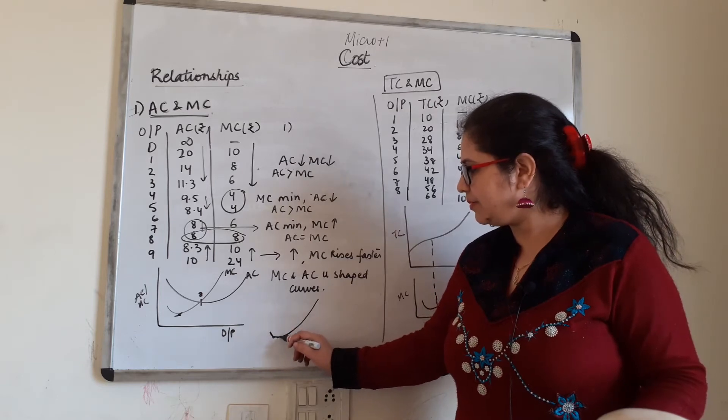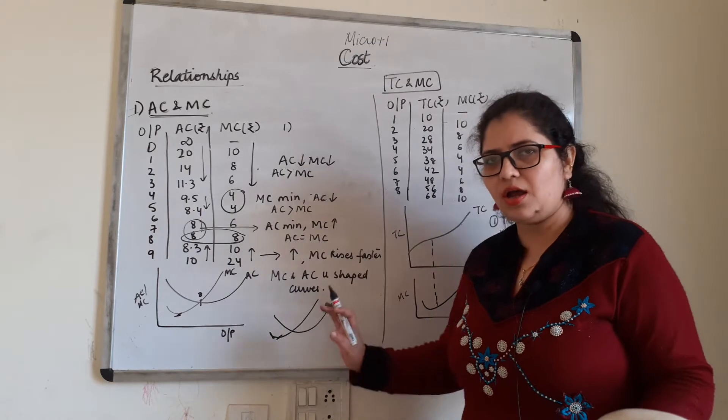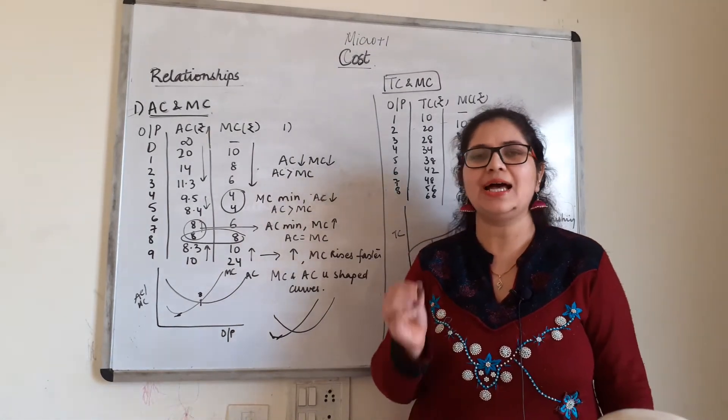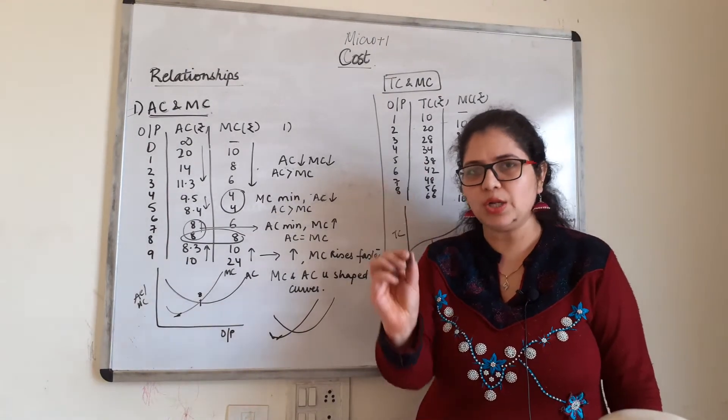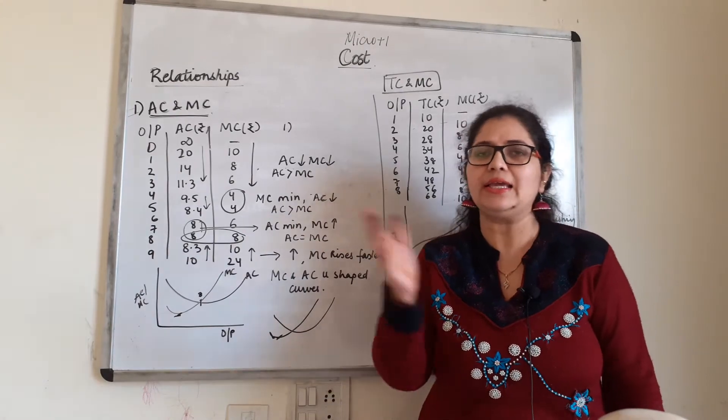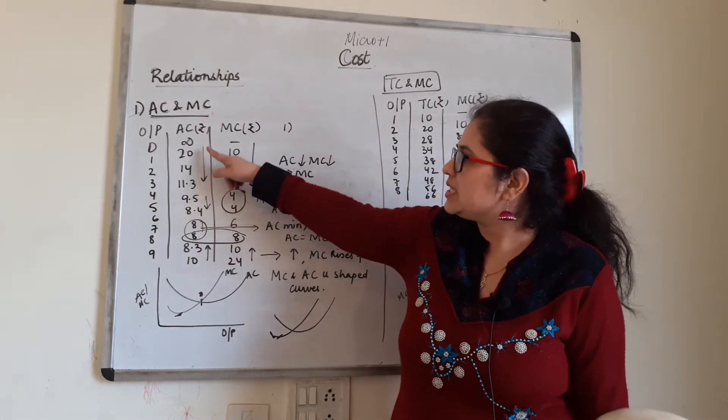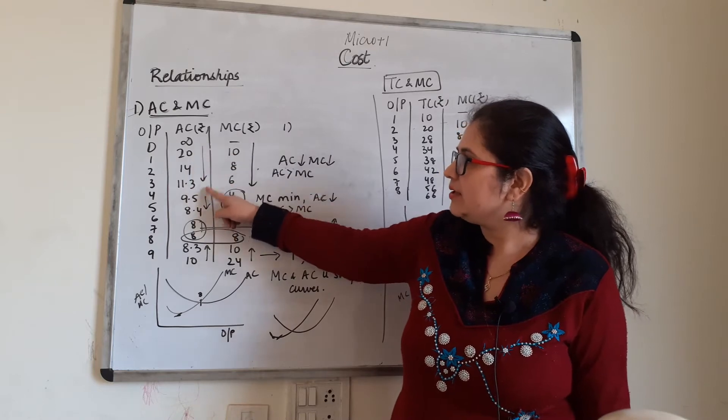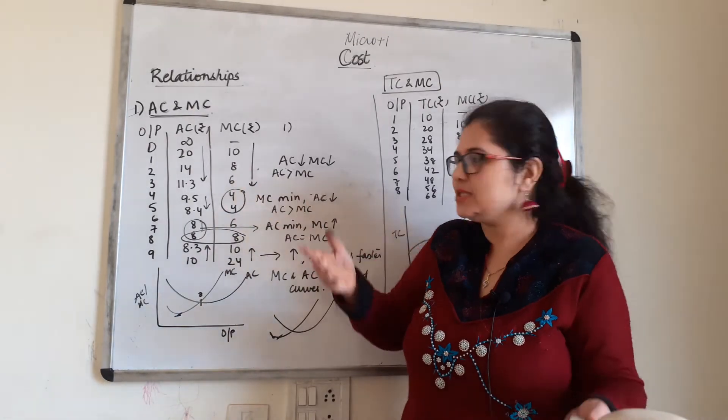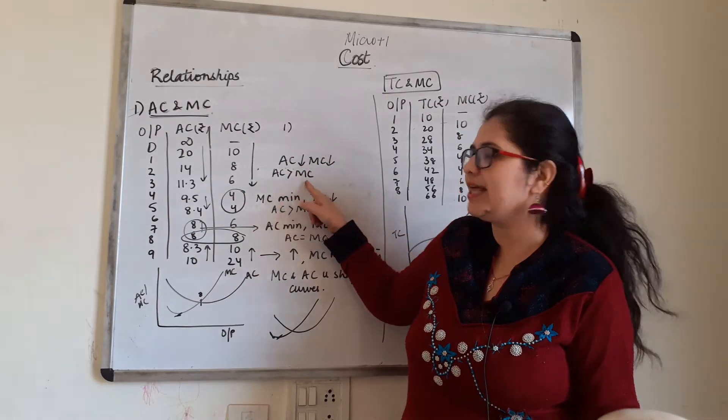Look, it's falling, then rising, then rising. And versus this, AC, look, it's moving slowly. Now, if you have written relationships, I had to explain before. Look at the table. Look at the curves. The curves are falling, falling, equal, rising. So, let's look at the table. Look at the first three units, AC is also falling. MC also fell, correct. But AC is greater than MC. And that is what my relationship is. AC is falling, MC is falling, but AC is greater than MC.